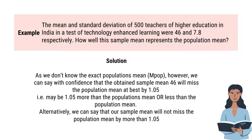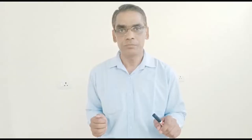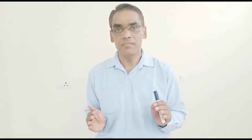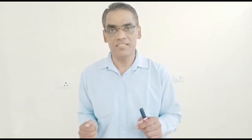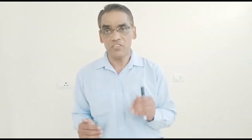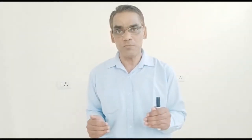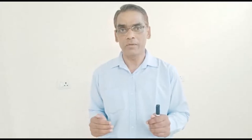Alternatively, we can say that our sample mean will not miss the population mean by more than 1.05. There are three cases. Let us examine this aspect one by one.